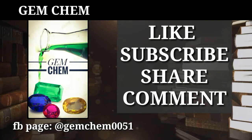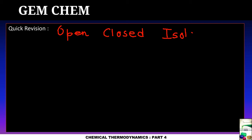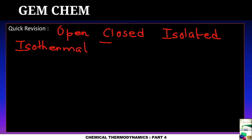Since chemical thermodynamics is a long topic, we need a quick revision on what we have done. Previously we covered open system, closed system, and isolated system. We also know the types of processes: isothermal process, which takes place when temperature is kept constant.